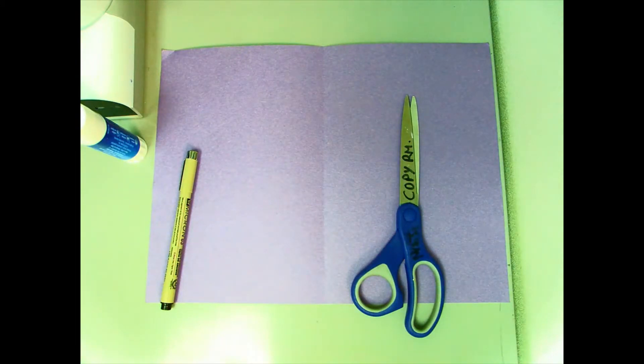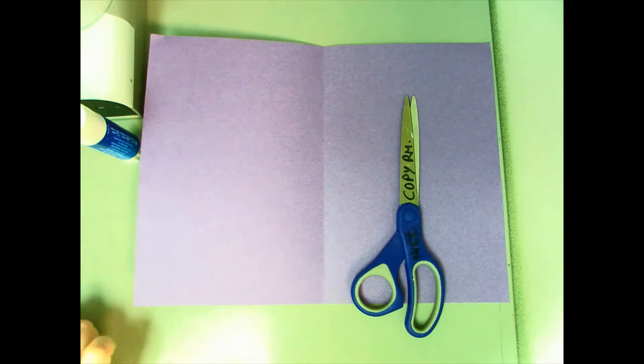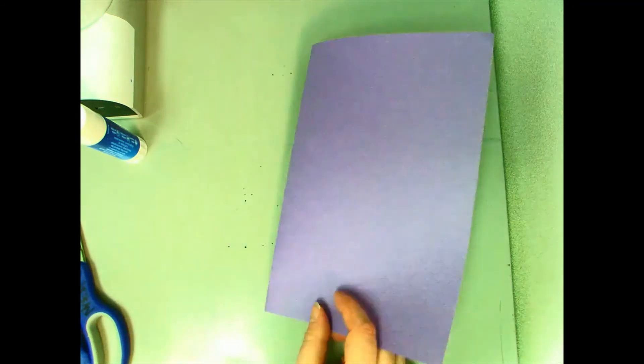So what I'm going to do is start with this piece of construction paper and I'm going to fold it in half. I've already given it a crease here so I know where that is and then I'm just gonna trace my hand.